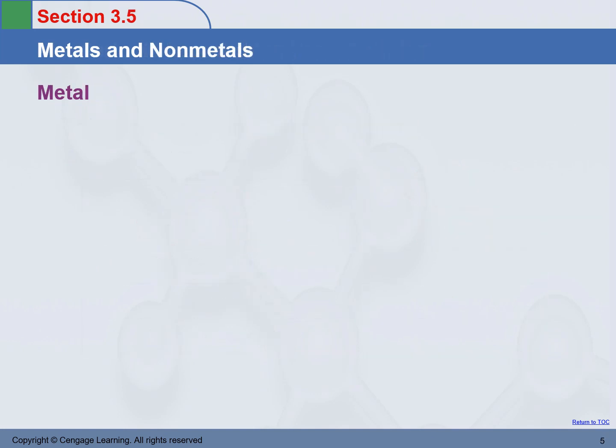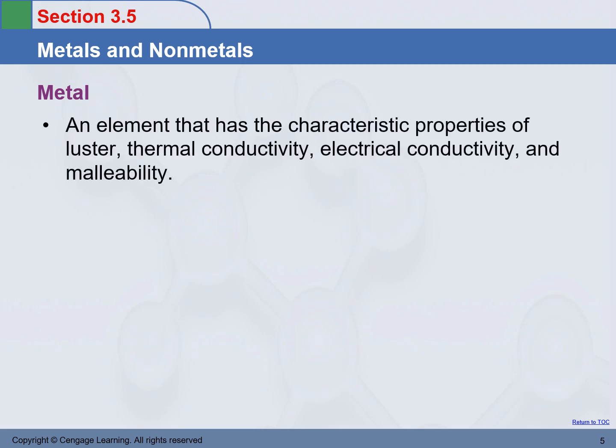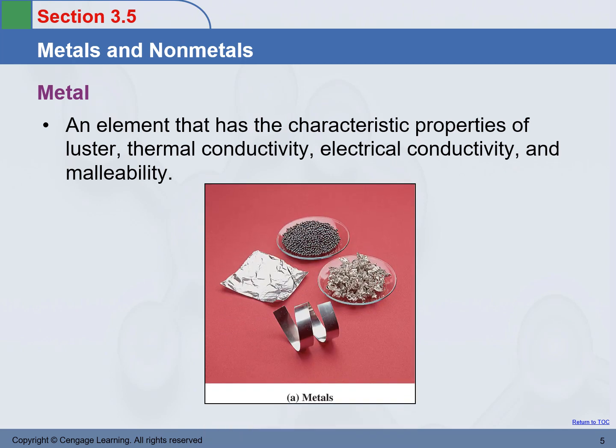All elements are either metals or non-metals. A metal is an element that has the characteristic properties of luster, thermal conductivity, electrical conductivity, and malleability. They are shiny, they are good conductors of heat or electricity, and they can be made into different shapes.